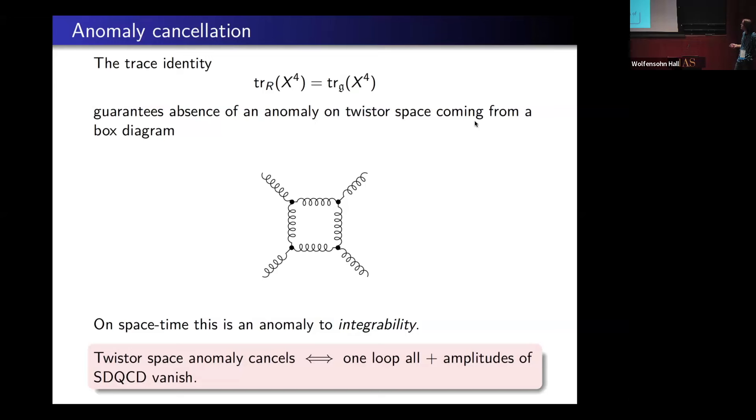This guarantees that our theory is a local theory on twistor space. On spacetime, there is no such anomaly. This is not a gauge anomaly on spacetime; instead, it's an anomaly to integrability. The twistor anomaly vanishing happens if and only if the one-loop all-plus amplitudes vanish. This connects to some old observation by Bardeen in the 90s that the one-loop all-plus amplitudes were an obstruction to integrability of self-dual theories.